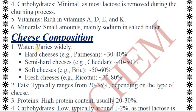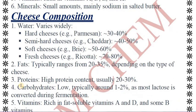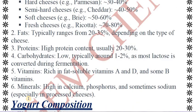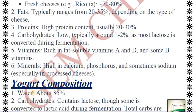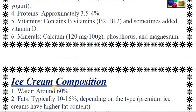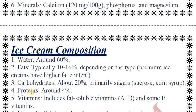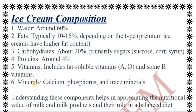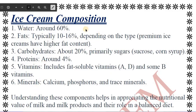Cheese contains water, and the water content varies because there are different types of cheese: hard, semi-hard, soft, and fresh. Cheese also contains fats, proteins, carbohydrates, vitamins, and minerals. Yogurt (curd/dahi) is made up of water, carbohydrates, fats, proteins, vitamins, and some minerals. Ice cream contains water, fat, carbohydrates, proteins, and vitamins along with some minerals. Understanding these components helps us know the nutritional value of milk and milk products and how they play a role in our daily balanced diet.